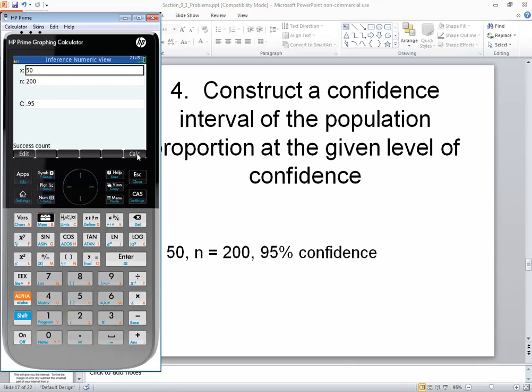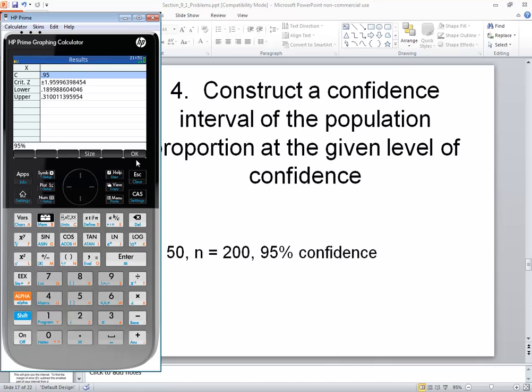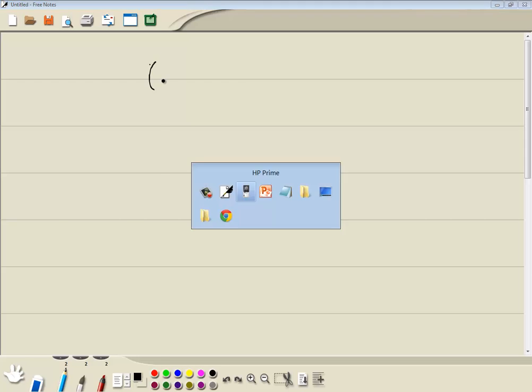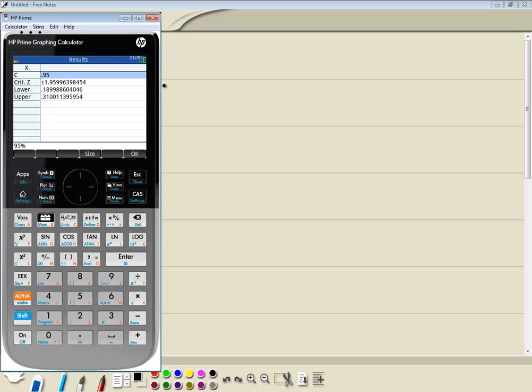Now you see there's a calc button right here. If I click that calc button, you see that we've got a lower and we've got an upper. That's our confidence interval. And if I were to round this to two decimal places, let me bring that up here.